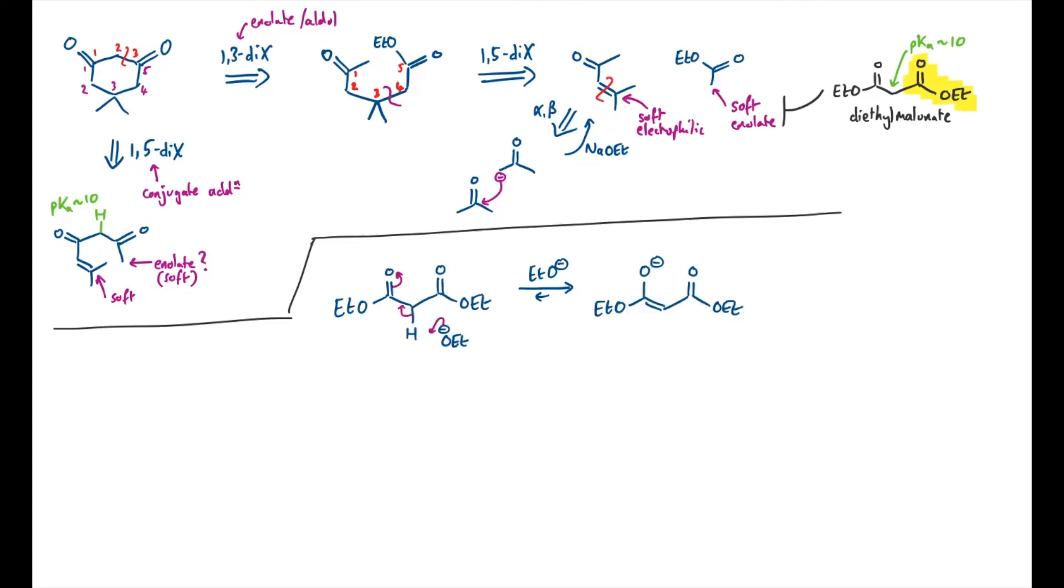Now I have my soft enolate if it was presented with the acetone self-condensation product I would expect it to do conjugate addition like this. This step again will be reversible because I would expect the E1cb reverse reaction to be plausible with the diethyl malonate enolate as a stable leaving group.